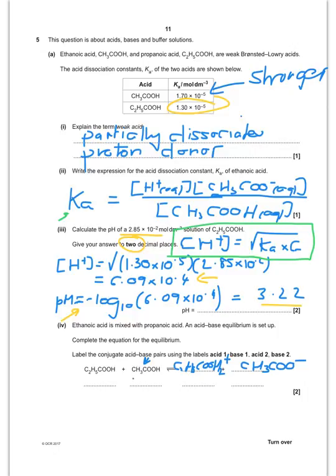So, that means that this is acting as, let's call it acid 1, and then its conjugate base is here, so that's base 1. This would be base 2, and therefore this one is acid 2.